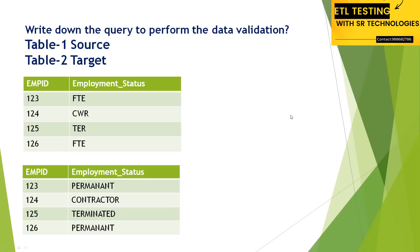Let's understand what the source and target are. The first table is employee employment status. The first row contains employee ID 123 with status FT, which is full-time employment. The second row is 124 with CWR, meaning contract. Employee 125 has TER, which means terminated, and 126 is FT again.